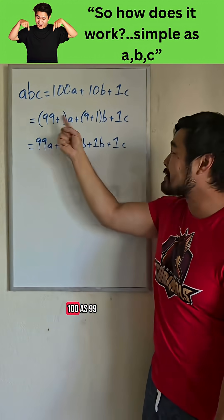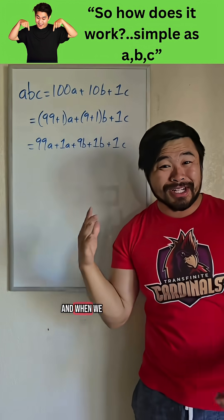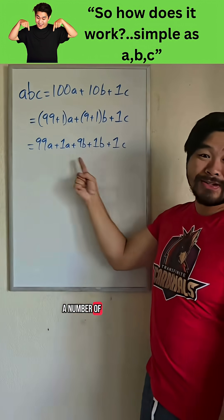Now let's rewrite 100 as 99 plus 1, and 10 as 9 plus 1. And when we distribute, we get a number of this form.